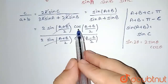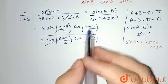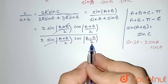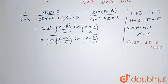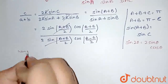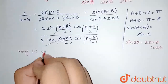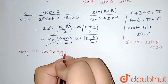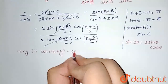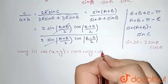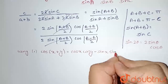After cancellation, in the numerator we have cos(A/2 + B/2) and in the denominator cos(A/2 − B/2). We will use two formulas: cos(x+y) = cosx·cosy − sinx·siny, and cos(x−y) = cosx·cosy + sinx·siny.